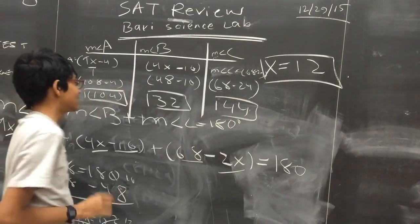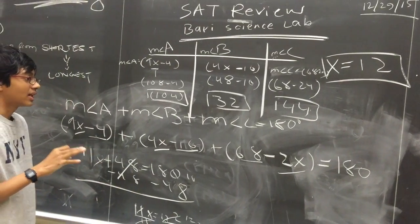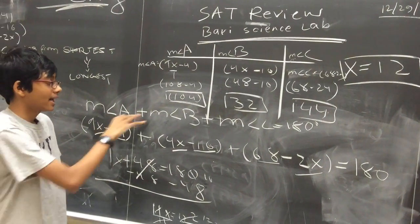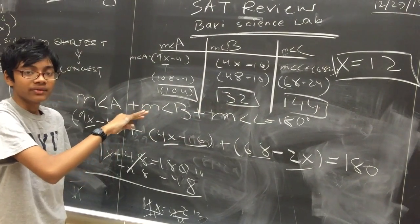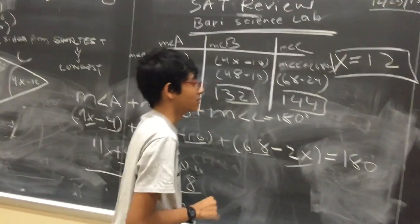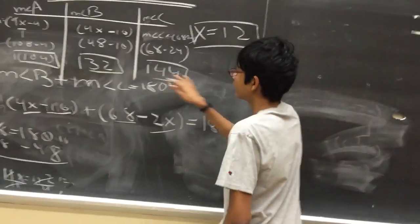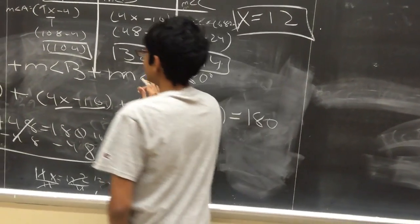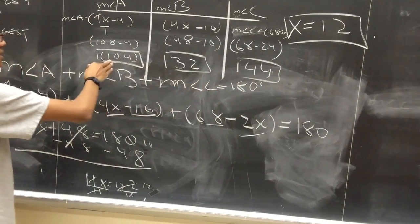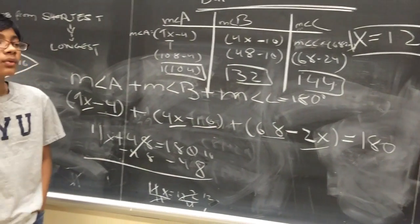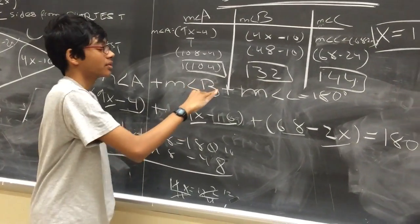Now what we're going to do is check if these values are correct by adding the measures of all three of these angles and see if they add up to 180. So 44 plus 32 gives us 76, we add 76 to 104, we get 180.